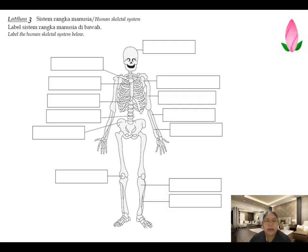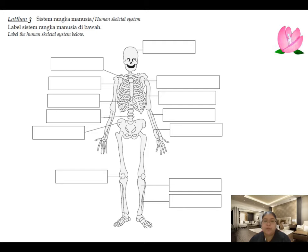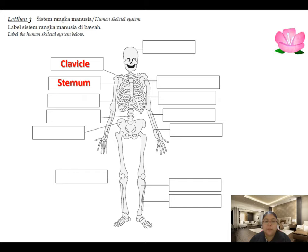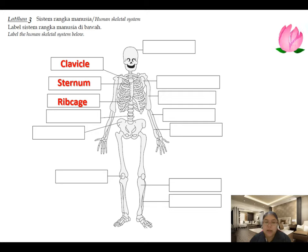Next, you need to label all the parts of the skeletal system. Make sure you have memorized every part and the spelling before labeling. The shoulder part is the clavicle. The center bone of your chest is the sternum. The small soft bone is the rib cartilage — sometimes called rib cap. The center column — tulang rusuk — we call it the vertebral column.